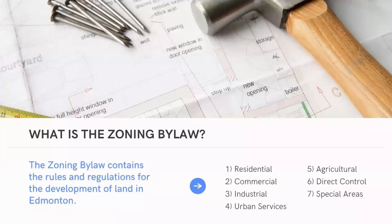So what is the Zoning Bylaw anyway? The Zoning Bylaw contains the rules and regulations for the development of land in Edmonton. For the purpose of land development, the City of Edmonton is divided into zones. The zone that a particular property is located on determines what can be built on that property.